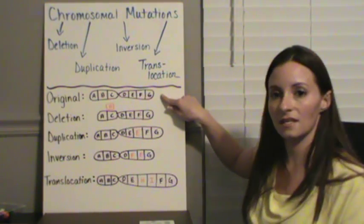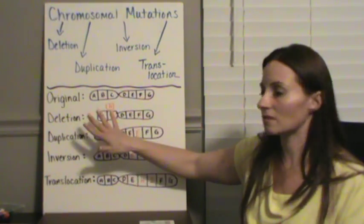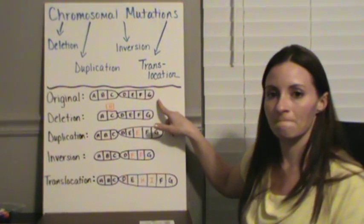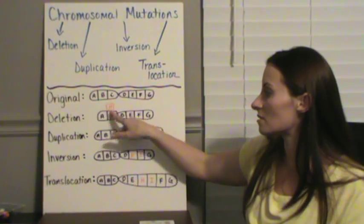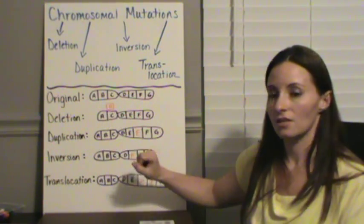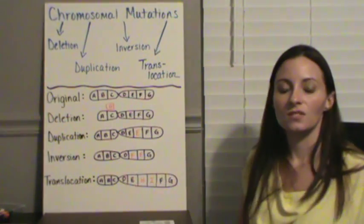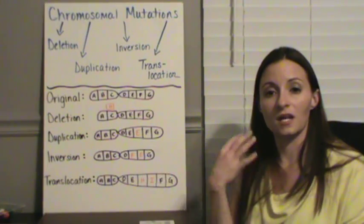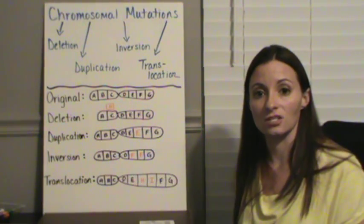So let's say here we have our original chromosome. Our original chromosome has the genes ABCDEFG. If we delete it, we're going to lose an entire gene. So now we only have ACDEFG. So what's going to happen is whatever that gene coded for is going to become a problem within our body because we're not going to have that coding for that gene.